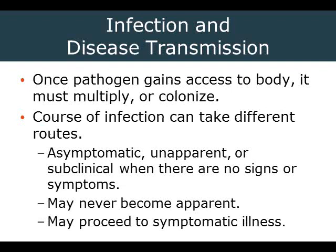Once a pathogen gets into your body, it has to multiply or colonize. That's why someone who thinks they have food poisoning doesn't get sick immediately — it takes time for bacteria to build up to a level that actually affects the body. Some people have been exposed to certain diseases and built immunity without ever knowing it, because they remained asymptomatic — an unapparent or subclinical exposure where no signs or symptoms developed.